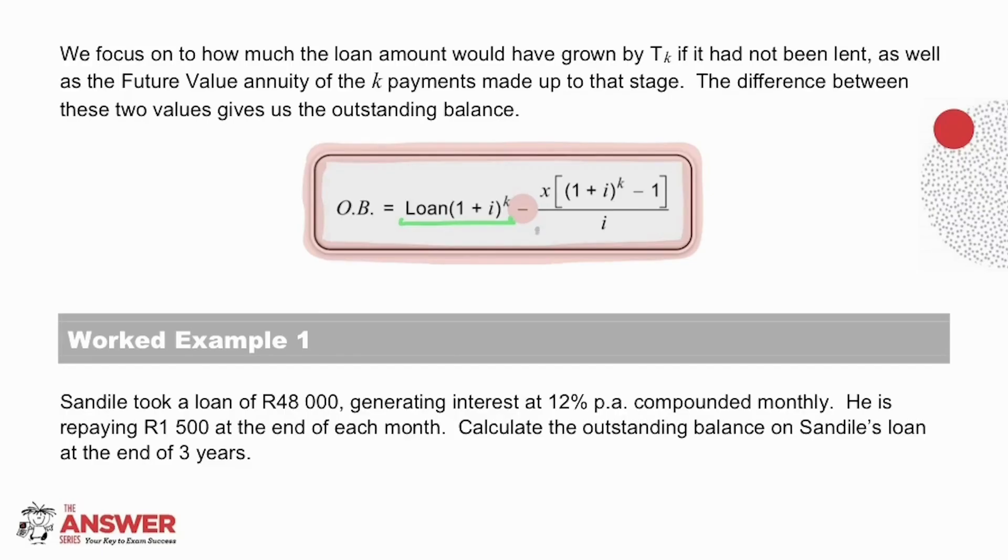And the second part is the annuity which gives us how much the payments of X rand for k time periods would have accumulated to. The difference between the two will be what is still outstanding on the loan.